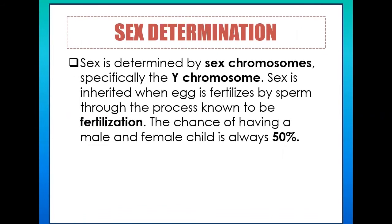From the chromosomal method discussion, we can agree that sex is determined by sex chromosomes, specifically the Y chromosome. The Y chromosome is responsible for determining the sex of the offspring because it is the only chromosome that enables an organism to become male. When a Y chromosome is present in the sex chromosome, that automatically identifies the organism as male.